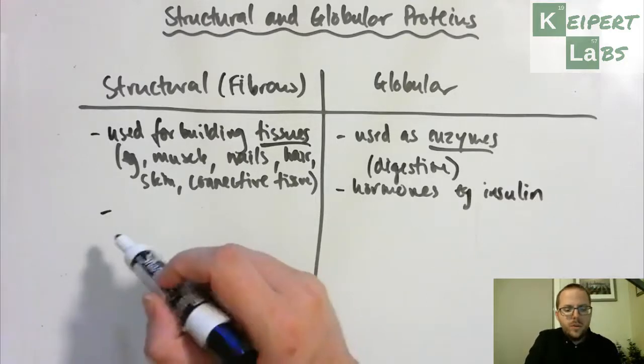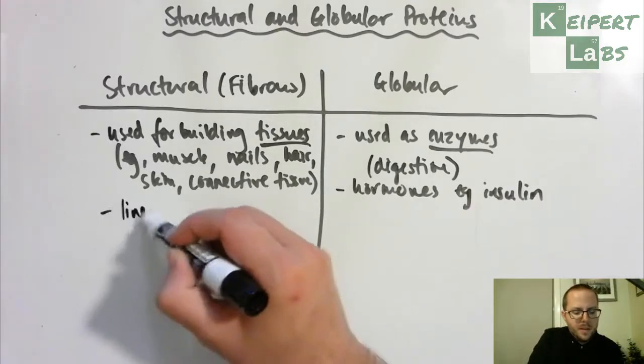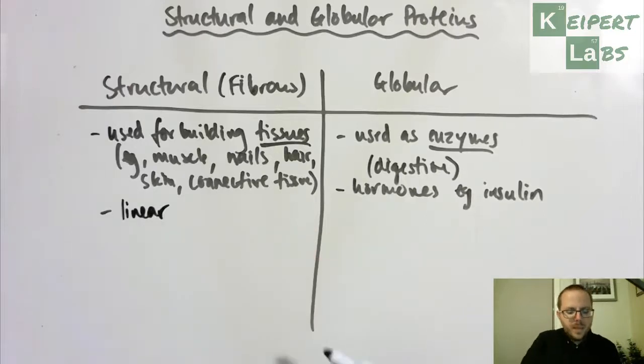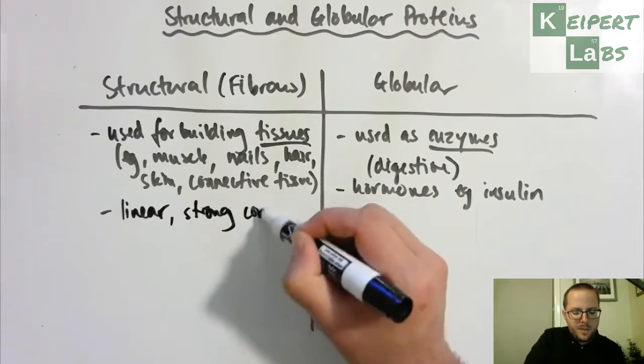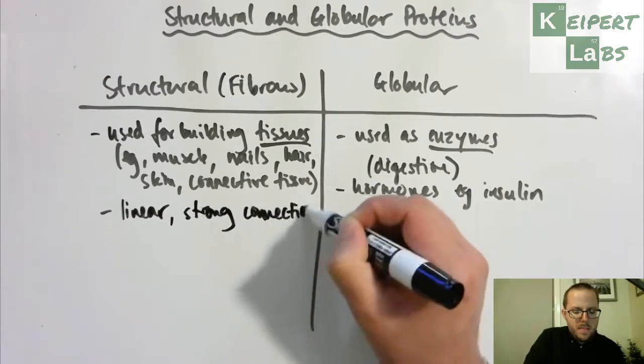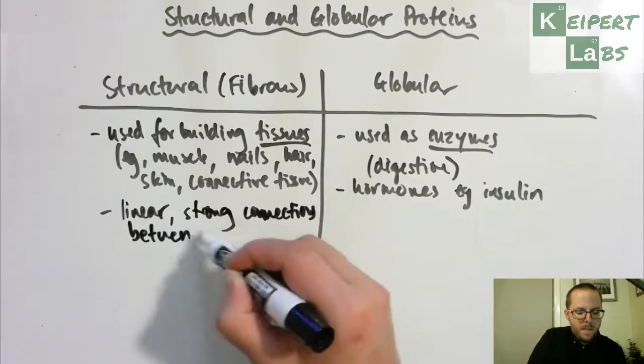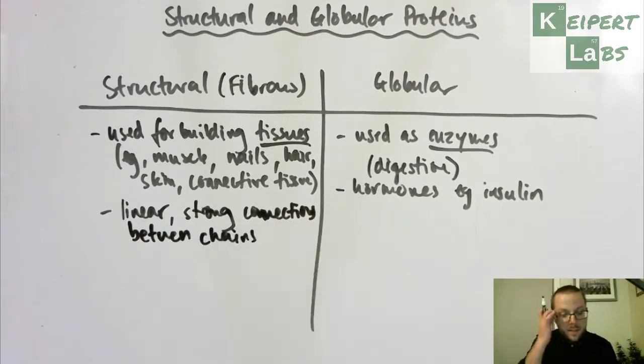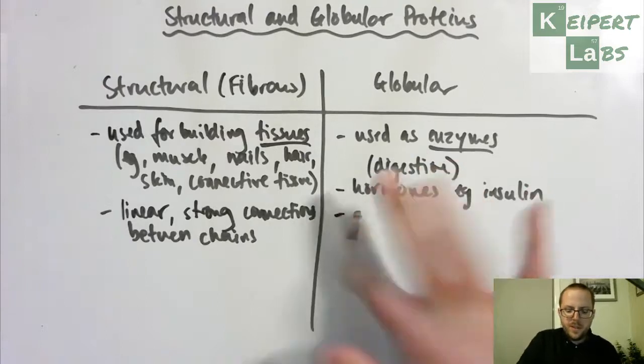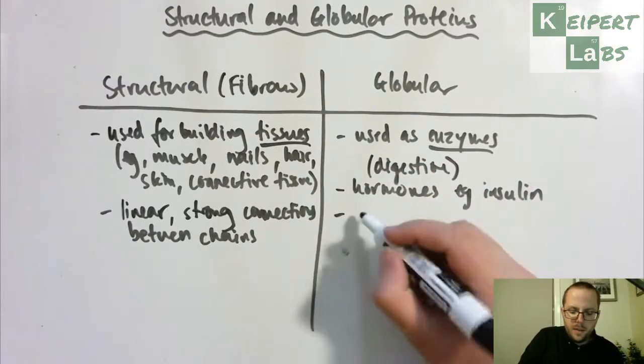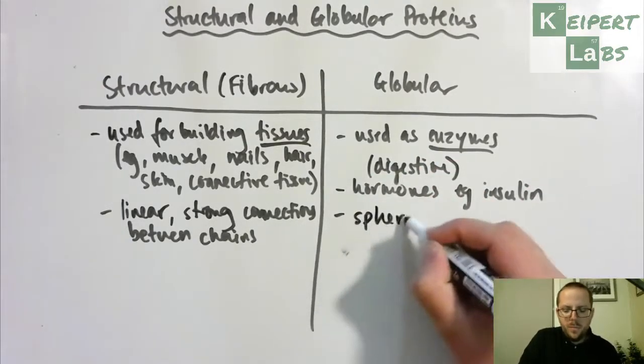So structural or fibrous proteins tend to be linear. They've got strong connections between chains. In the same way that we looked at, the equivalent would be like cellulose as a glucose polymer, that it's linear, you get strong connections between chains. Whereas, when we're thinking about globular proteins, we're thinking that they are spherical, or globe-like in shape.